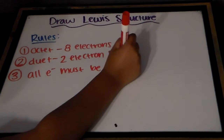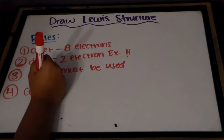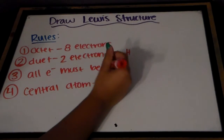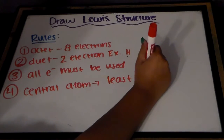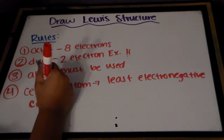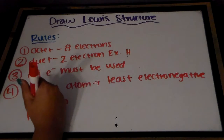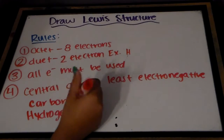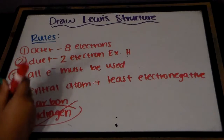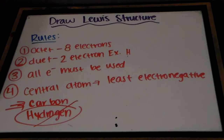The duet rule says that there are some exceptions to the octet rule where the atom needs two electrons, not eight. An example of this is hydrogen. Our third rule is that all of the electrons must be used. Our last rule is that the least electronegative element must be the central atom, but there are some exceptions. If we have carbon, carbon automatically becomes the central atom. Hydrogen is never the central atom. So with these four rules we can start drawing our Lewis structures.